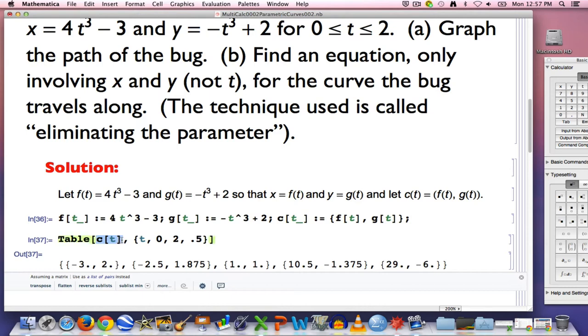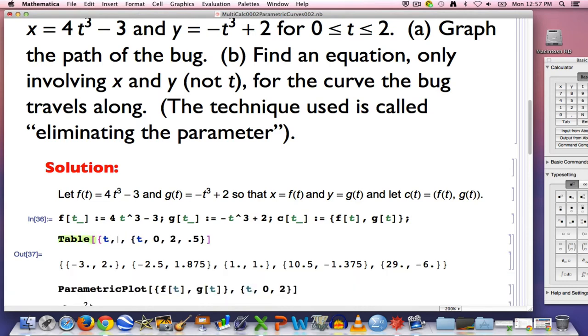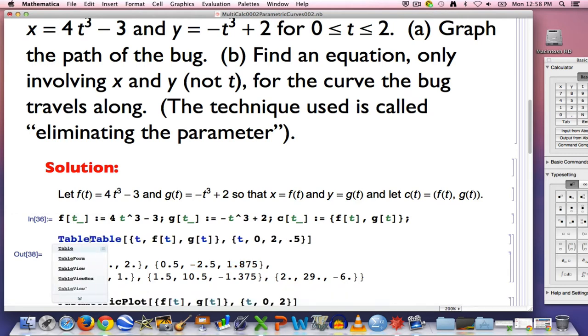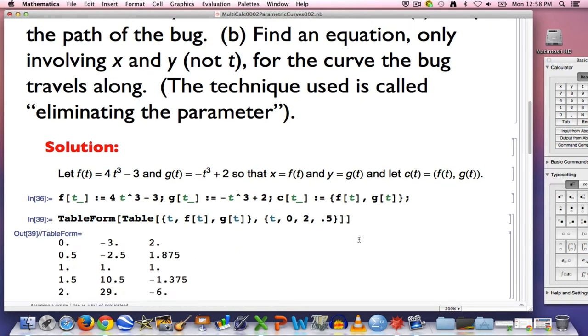Let me show you something else I can do. I can also include t itself in this output, like this. In a sense, make points that have three coordinates, but you do not plot the t coordinate when you plot the parametric curve. Here we see when t is 0, the point you plot is negative 3, 2. When t is 0.5, the point you plot is negative 2.5 comma 1.875, etc. That's what this means. I'm going to put this in a table that is easier to see.